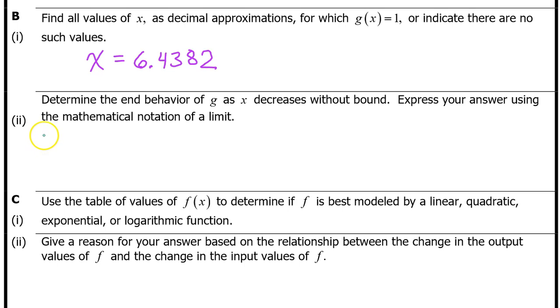So we are doing the limit as x approaches... As x decreases without bound, x approaches negative infinity. Next, don't forget to put g of x. So we have the limit as x approaches negative infinity of g of x.